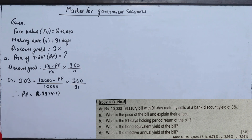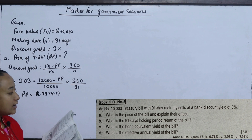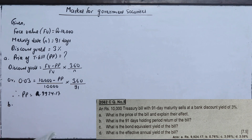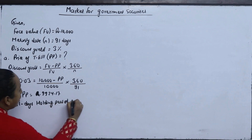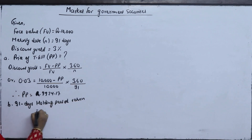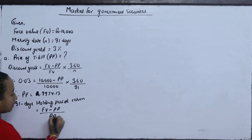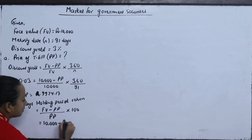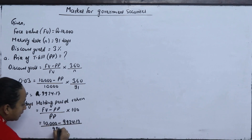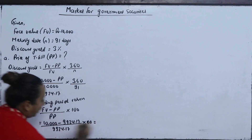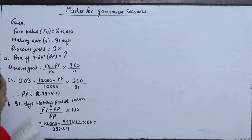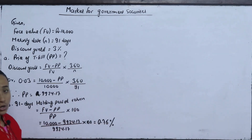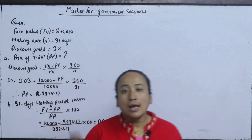The treasury bill price is 9,924.17. Now, what is the 91-day holding period return (HPR)? The formula is: HPR = (FV − PP) / PP × 100. Using face value 10,000 and purchase price 9,924.17, the 91-day return is 0.76%.